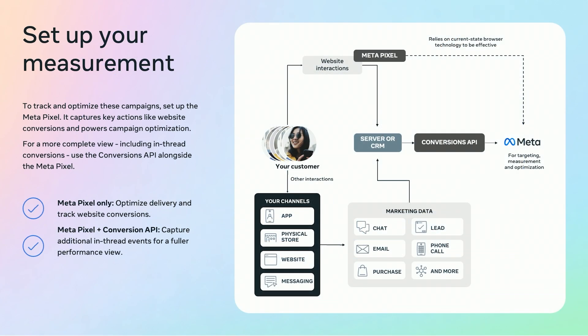To track and optimize your campaigns, we recommend using the Meta Pixel. The pixel allows you to capture online conversions and optimize delivery based on those actions. If your business also wants to track in-thread or offline conversions, you can add the Conversion API and report events. This will give you a fuller view of how your ads are performing, both on and off your site. Setup options: Meta Pixel only — great for optimizing and tracking site events. Meta Pixel plus Conversion API — ideal for capturing in-thread events and building a more complete performance picture.